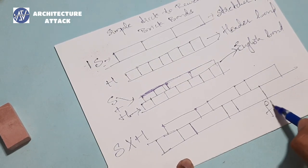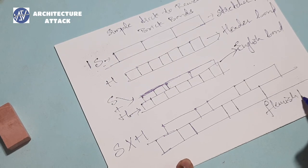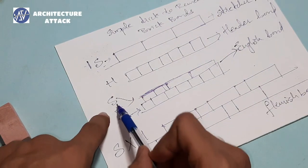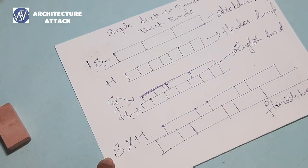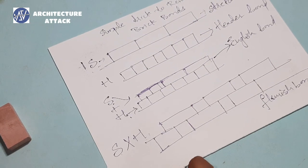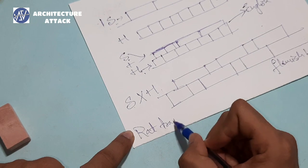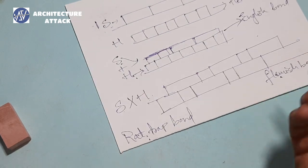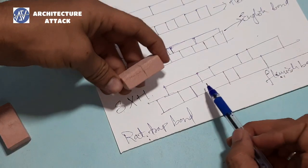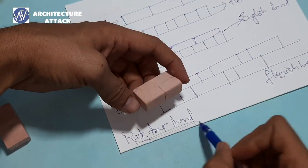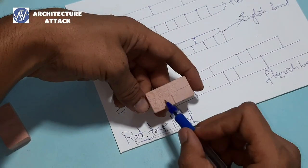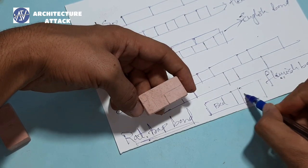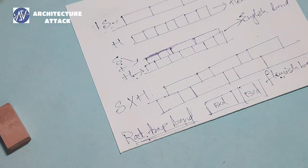If we multiply stretcher into header — meaning in the same layer we see both stretcher and header alternating — stretcher, header, stretcher, header — and the next layer also has stretcher and header alternating, then this is called Flemish bond. So the memory trick is: S = stretcher bond, H = header bond, S + H = English bond, S × H = Flemish bond.